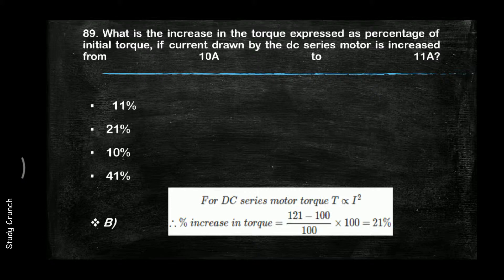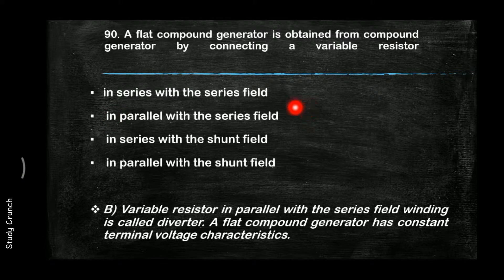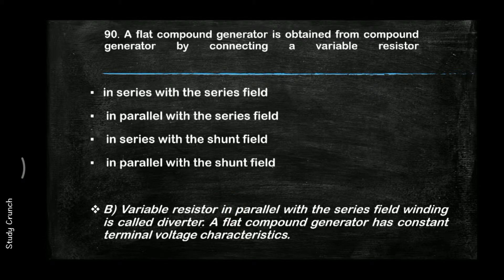A flat compound generator is obtained from a compound generator by connecting a variable resistor in parallel with the series field. The answer is B. The variable resistor in parallel with the series winding is called a diverter. A flat compound generator has a constant terminal voltage characteristic.